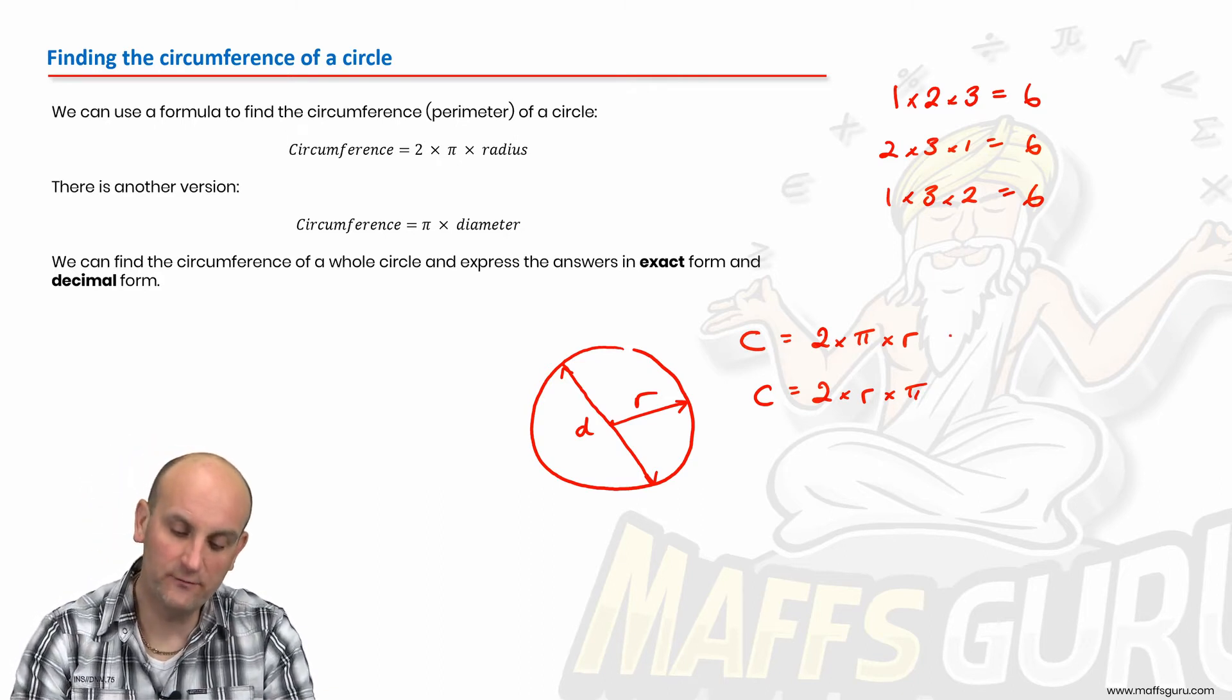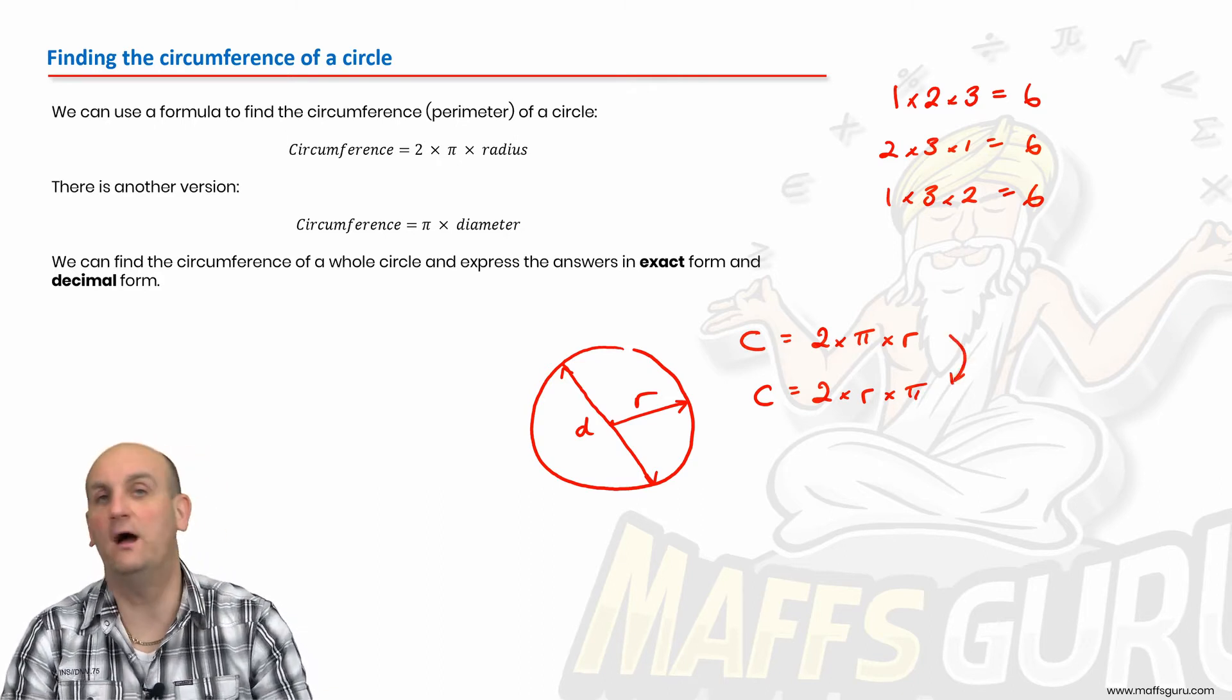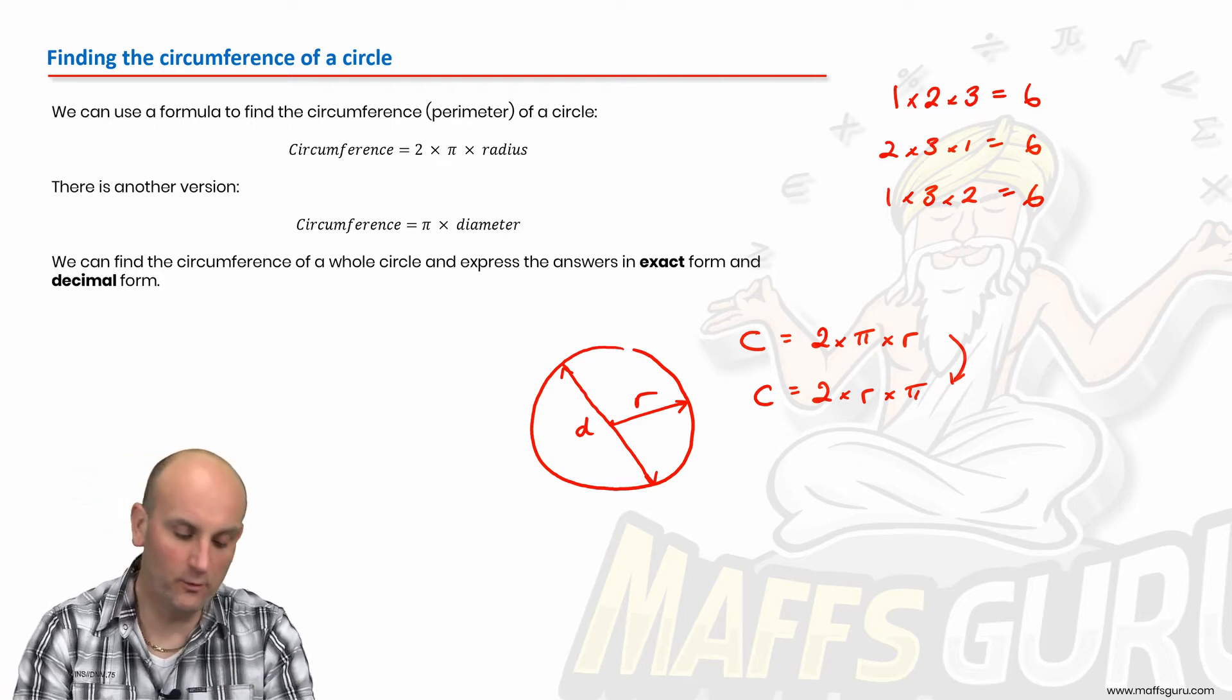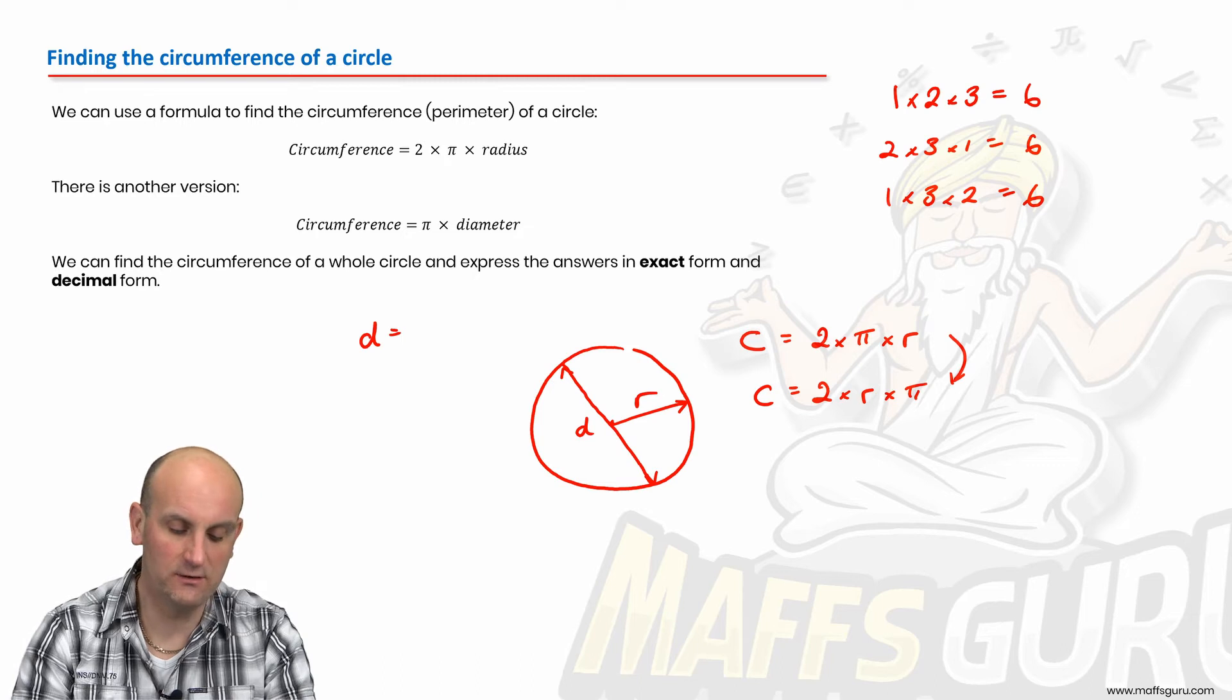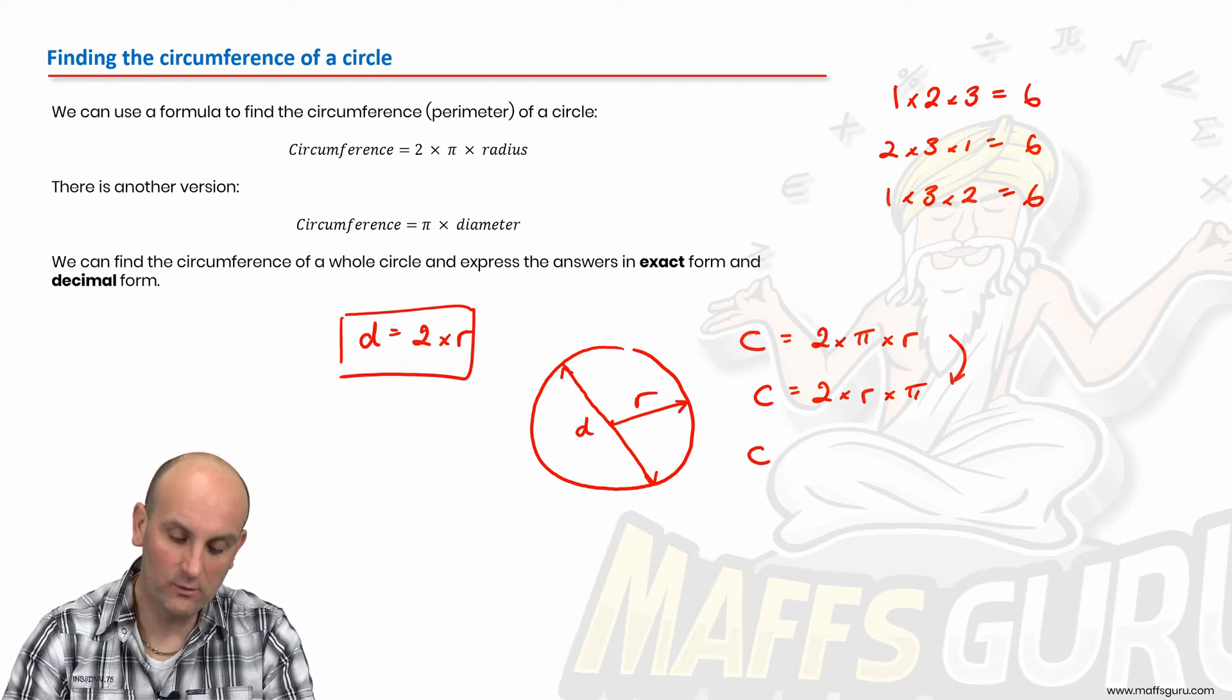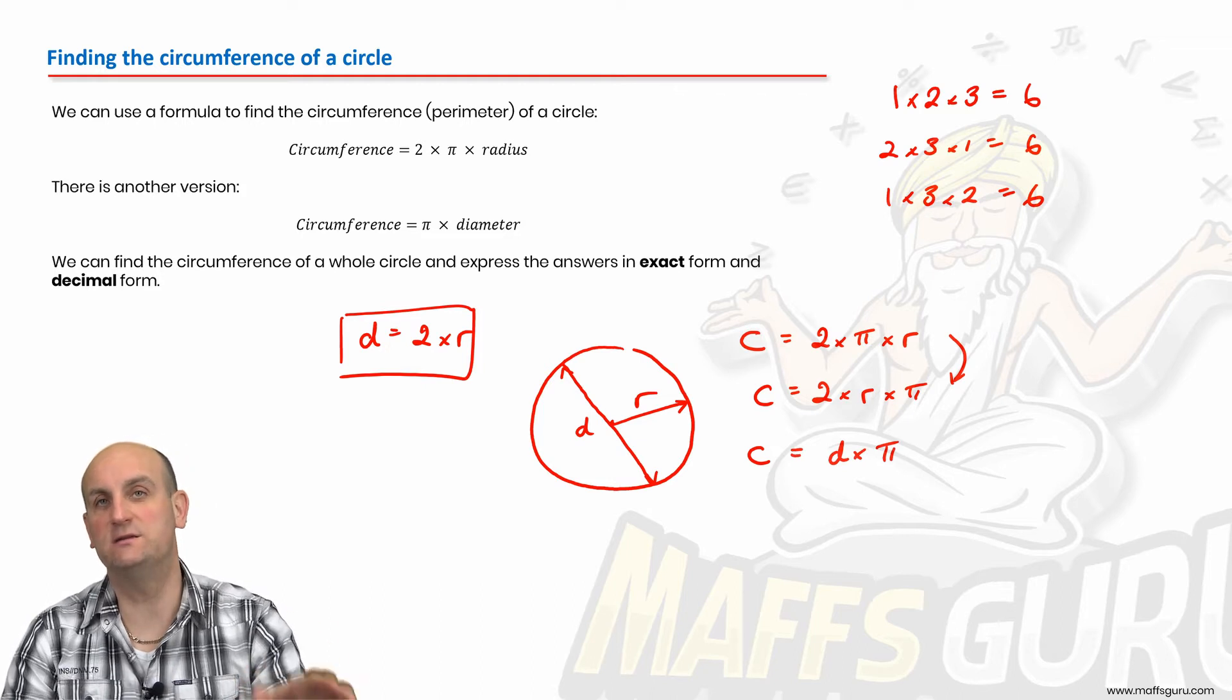And so in this situation, to go from that line there to that line there, I've just changed the order. Now, why is it important to me? Because we also know that the diameter of a circle is equal to two times r. So where I see two times r, I can replace it with d.